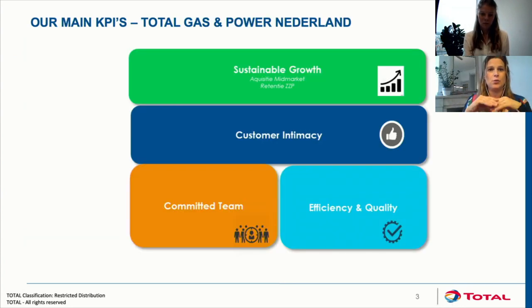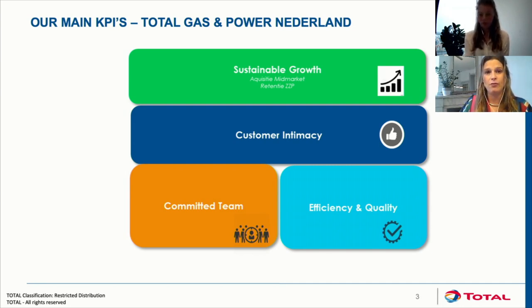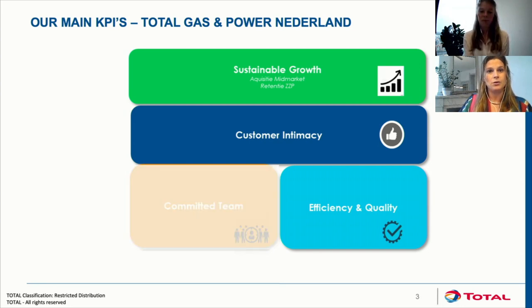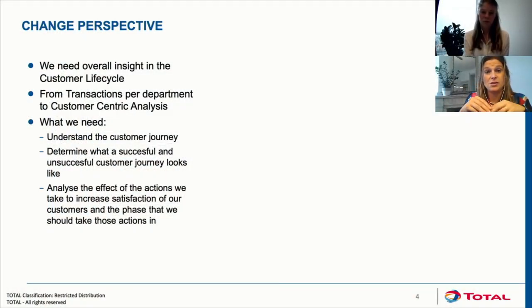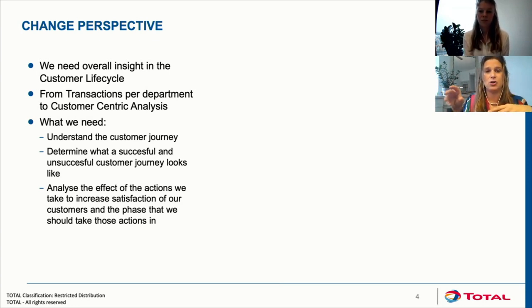At Total Gas and Power Nederland, we have four main KPIs where sustainable growth, customer intimacy, and efficiency and quality align very well with Process Mining. In order to become closer with our customers and offer the products and services they need, we need to know how they actually behave, not just how we think they should behave. That is why we decided Process Mining would be a valuable tool — stop making assumptions about the customer journey, but look at the actual picture instead.